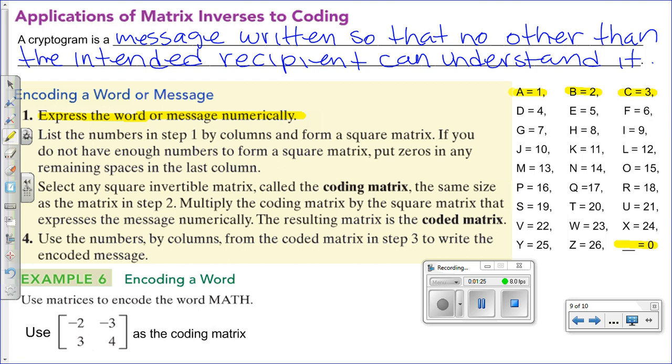Now, we're going to convert those letters into numbers, and then list those numbers by columns. I did mention last class that I actually prefer doing it by rows. That's the way I did it with my algebra 2 class. It works as well. However, my math lab is keeping it by columns, so that's how we're going to keep it. So you do that, and then you form a matrix. If you don't have enough numbers to form a square matrix, you put zeros in any remaining spaces.